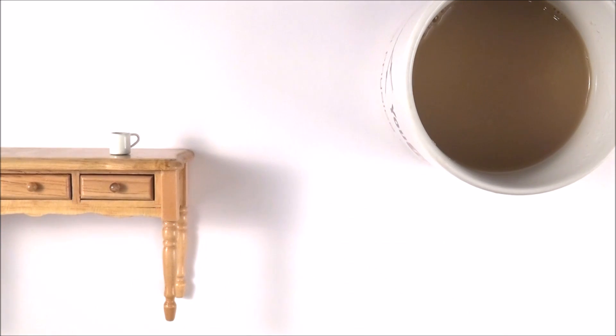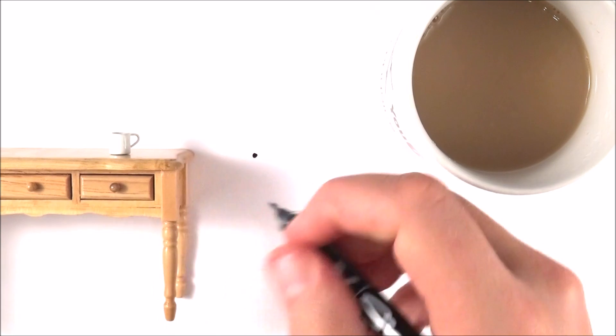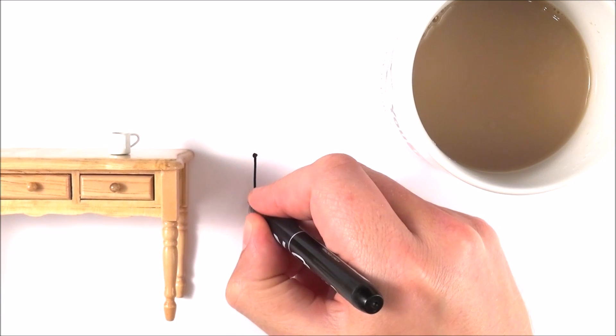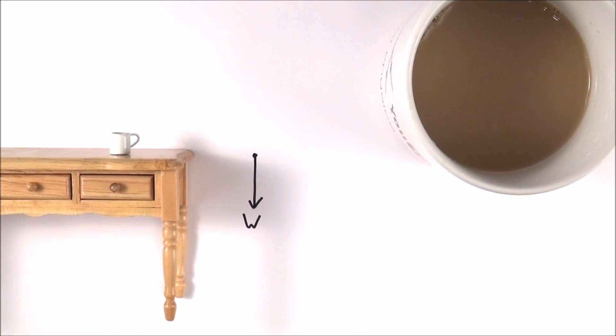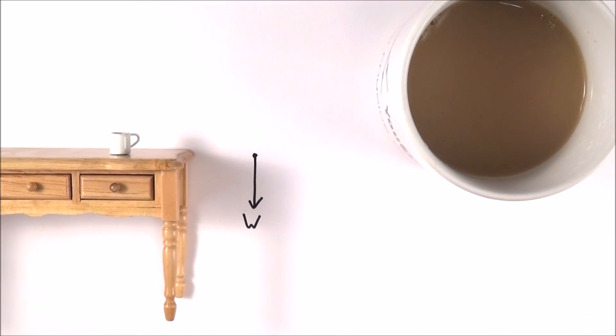So on this mug there's going to be a downwards force due to gravity, which we call the weight. I'm going to call that W for the weight. And the reason that this mug here doesn't fall through the table is because the table is pushing back upwards on it.